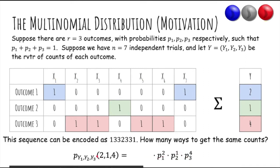Okay, but there are many ways to produce these counts. For example, this sequence might be encoded as first outcome one, then outcome three, outcome three, et cetera. But this is a string, but there are other ways to get the same counts. How many ways? Well, that's the same as the number of ways to arrange the string.